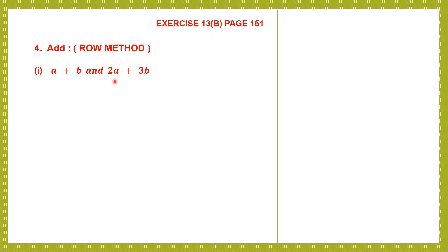Question 1: we have two expressions, a plus b, and 2a plus 3b. In the first step of the row method, we are going to write these two expressions in a single row. So I am going to write (a plus b) and I am going to write the second expression (2a plus 3b), and since this is addition, I am going to put a plus sign between them.